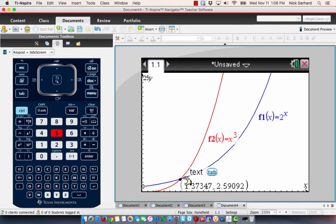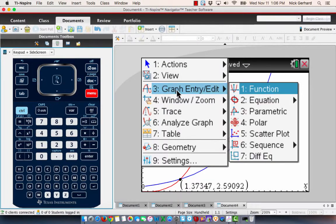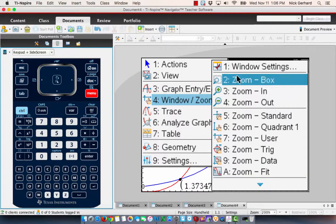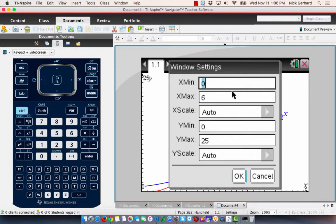Again, it looks like the red graph, x cubed, is still bigger than 2 to the x. But, let's make it one more window bigger. And we're going to go ahead here, window zoom settings. And we're going to go ahead to go to 0 to 20 and 0 to 1,000.